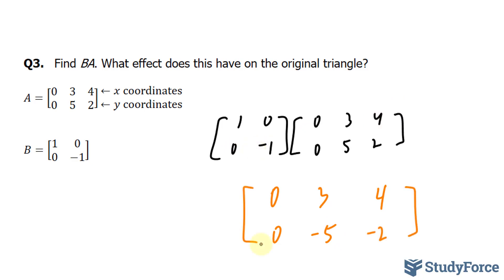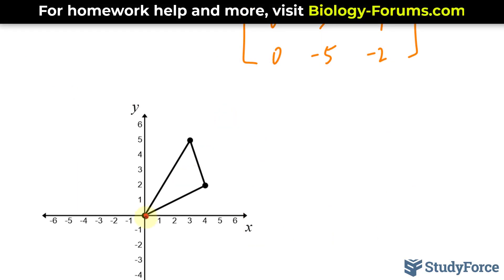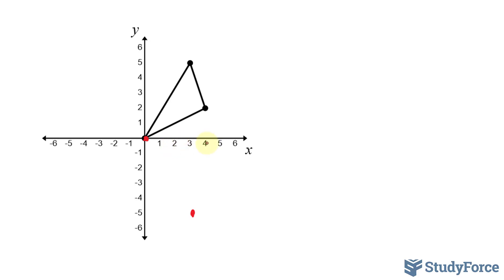Let's see what this will look like if we plot these points. Notice on your screen that we have the original triangle. Our point is 0 and 0, 3 and negative 5, that's down here. And 4 and negative 2, positive 4 and negative 2. Now let's connect these. As you can see, a reflection occurred of the original triangle.